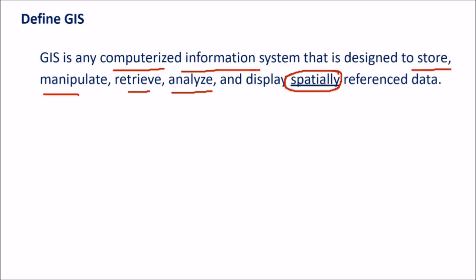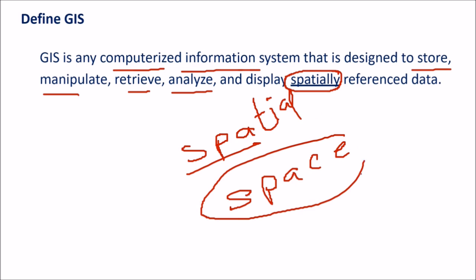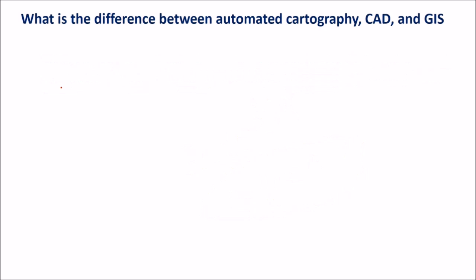Displaying spatially referenced data is very important because GIS deals with spatially referenced data. Spatial means those showing the location, size — this word has come from space. So with respect to space, reference data is what this GIS deals with.